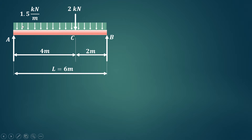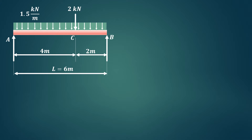First we will convert this uniformly distributed load into a point load. The meaning of 1.5 kN per meter is that for 1 meter length the load acting is 1.5 kN. Since the total length on which this UDL is acting is 6 meters, for 6 meters it will be 1.5 × 6 = 9 kN. As it is a rectangular distribution, that 9 kN load will act at the center.